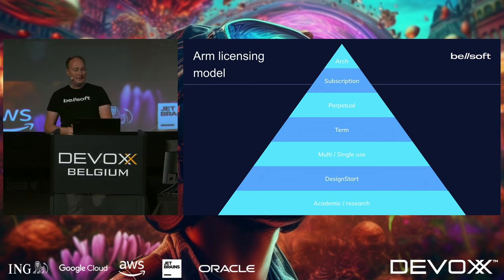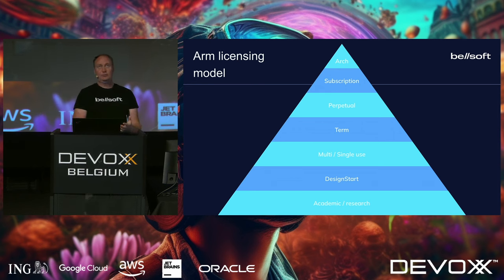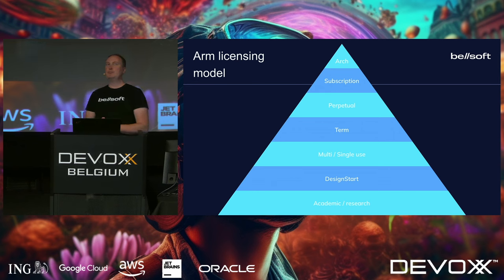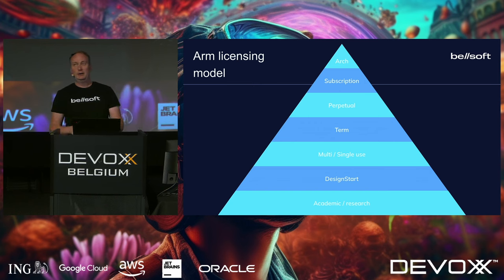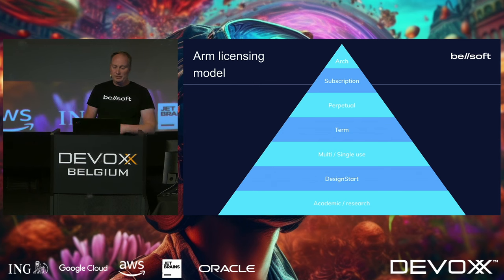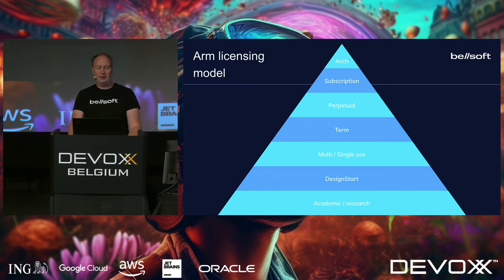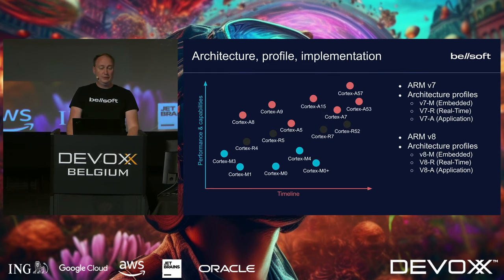That instruction set is licensed to different companies that build real hardware. ARM has stated that we may see some reference hardware by ARM publicly, but we haven't seen one yet. There are multiple types of licenses — you can even get a free license and build your own device, but that probably won't be able to run Java. For us, it's more interesting what happens with slightly more powerful ones.